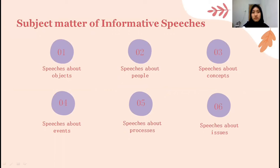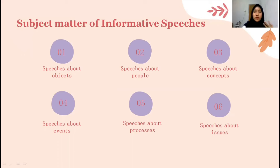Number two, speeches about people — focus on real and fictional individuals who are living or dead. For example, you can explain about J.K. Rowling and others. Number three, speeches about concepts — this is about speeches that focus on ideas or notions that may be abstract. For example, you can explain about human rights, religions, freedom, or how gravity works. Number four, speeches about events — focus on past occasions or ongoing occurrences, like a particular day in history. For example, the World Cup or an annual professional convention.